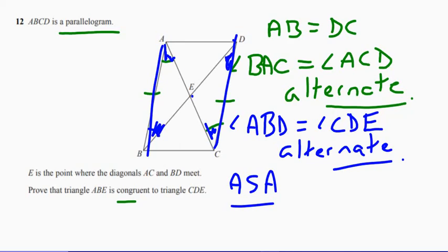And that's enough for congruent triangles. Okay, that's what we've actually shown, so therefore they must be congruent.